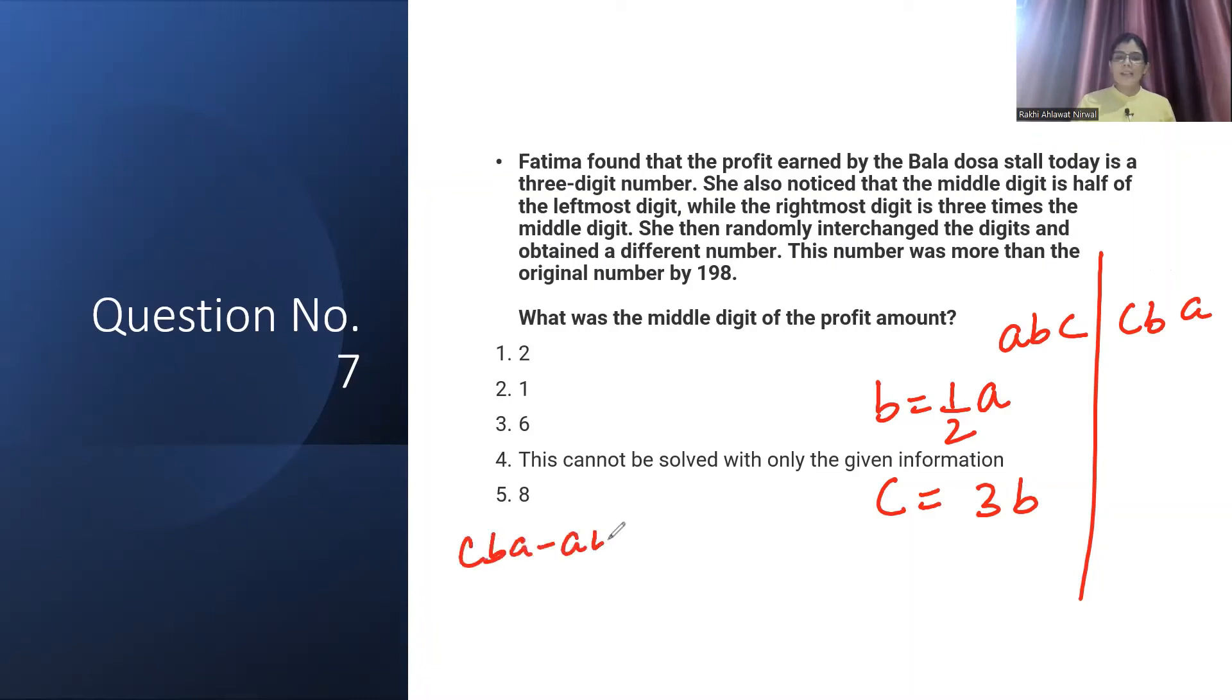This number was more than the original number by 198. That means CBA minus ABC equals 198. I have mentioned in class that if you have a difference, you have to write it in detail. We write 100C plus 10B plus A minus 100A minus 10B minus C equals 198. What was the middle digit of the profit amount? We have to find the value of B here.